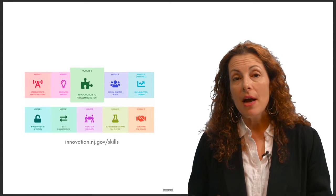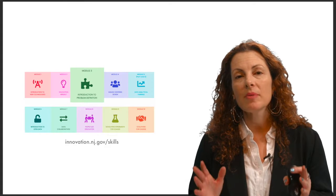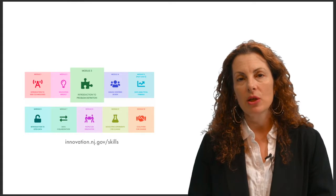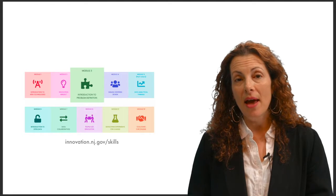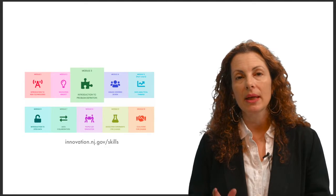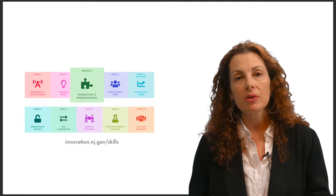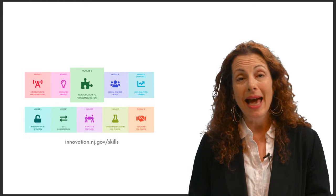Hi. My name is Beth Novak, and welcome. In an earlier module, we focused on the central skill of problem definition — the importance of articulating a clear, compelling, and specific definition of a problem and its root causes. As we said then, it is important to define the problem collaboratively. But how do we undertake such collaboration efficiently and effectively?